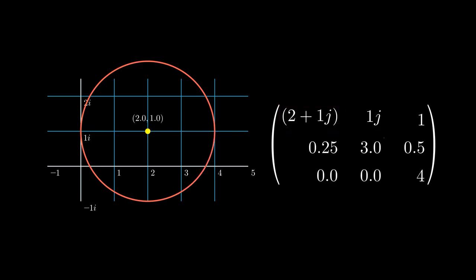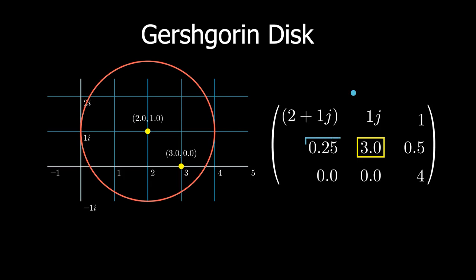We will call this circle the first Gershgorin disk. Same thing for the second one. Use the diagonal entry as the center, the sum of the moduli of other elements as radius. This is the second Gershgorin disk. And same thing for the third one.